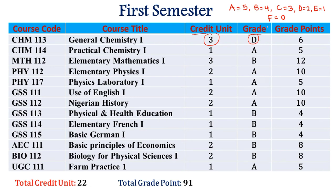Whatever your grade, you check the grade point. Since I got a D for Chemistry, that's a grade point of 2. You multiply it by the credit unit of 3, so 3 times 2 gives you 6 — that's the grade point from this course. The second course, Chemistry Practicals, has a credit unit of 1 and I got an A, so 5 times 1 gives 5. Mathematics with a B and 3 credit units: 3 times 4 gives 12.